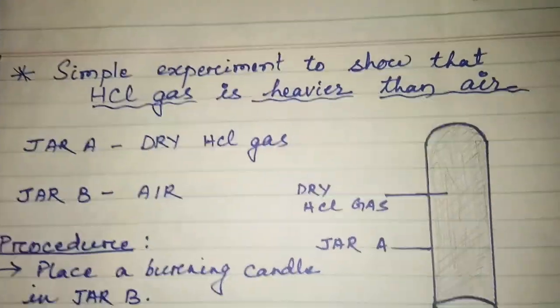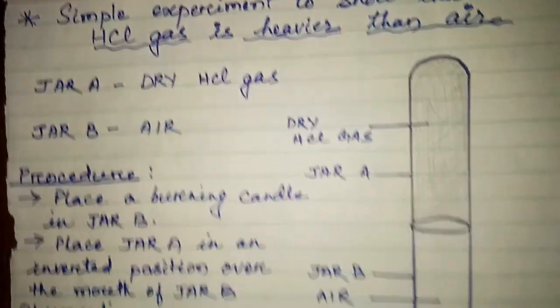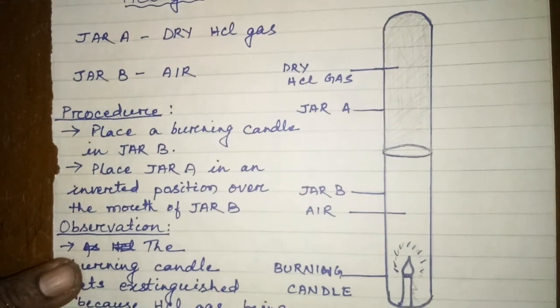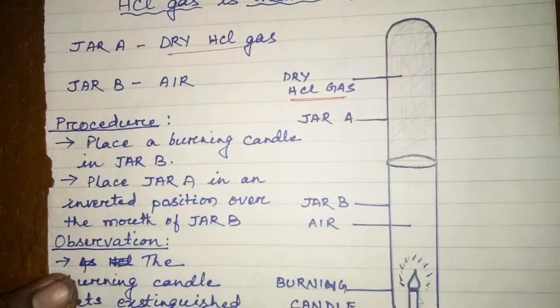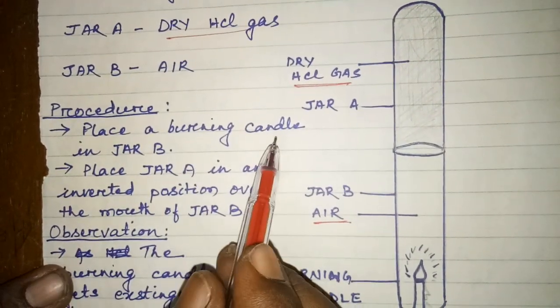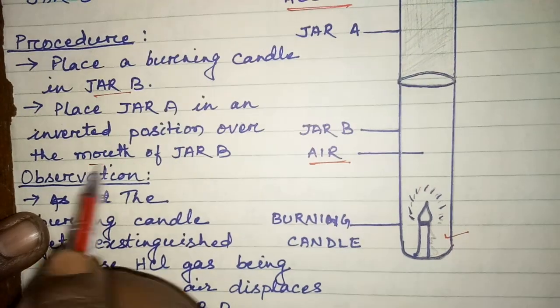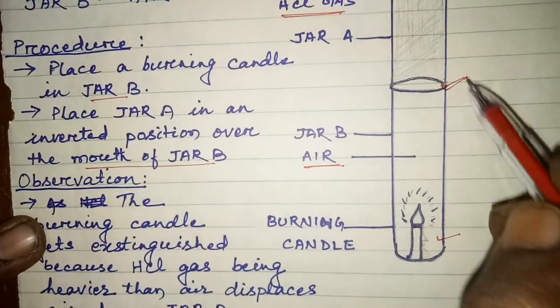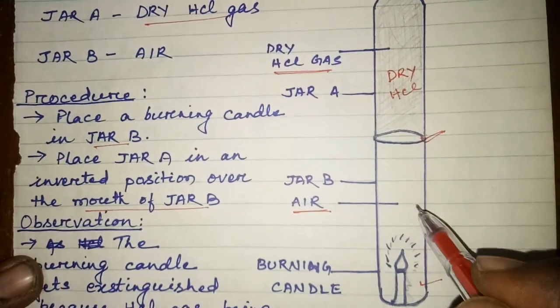Now we will discuss a simple experiment to show that HCl gas is heavier than air. Looking at the diagram, HCl gas is kept in jar A as dry HCl gas, and jar B contains air. The procedure: take a burning candle and place it in jar B, then place jar A in an inverted position over the mouth of jar B, joining their mouths together. Jar A, which contains the dry HCl, is inverted over jar B.